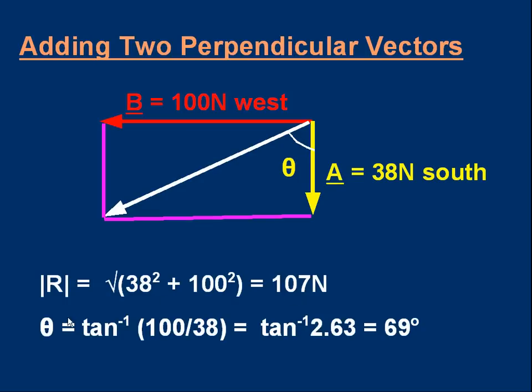Look at the angle. Theta is tan minus 1. Well it's the opposite which is 100 over the adjacent which is 38. So it's tan minus 1, 100 over 38. It comes to 69 degrees. We've done it.